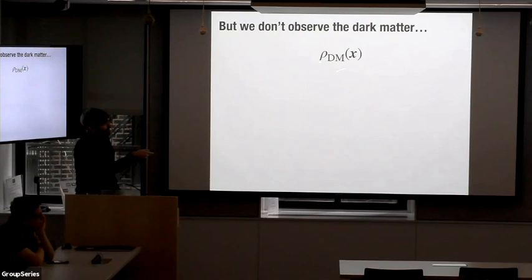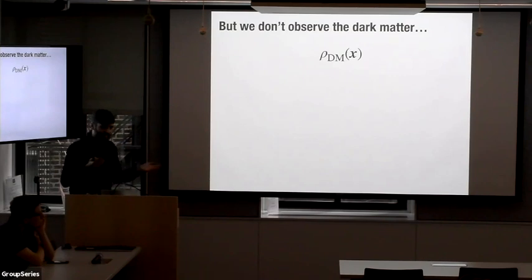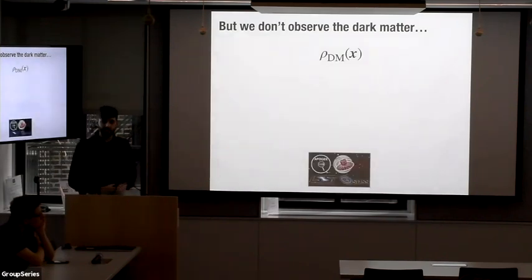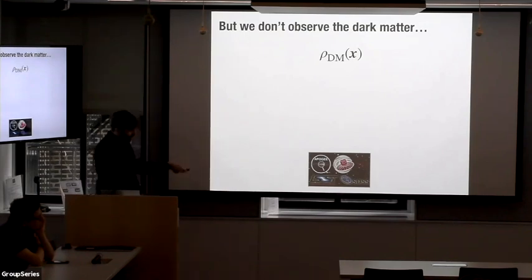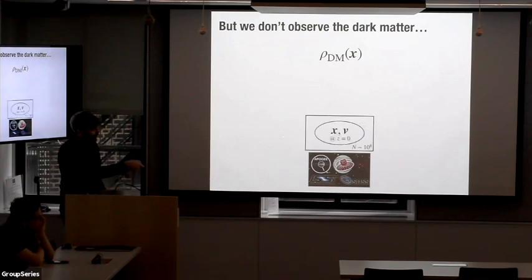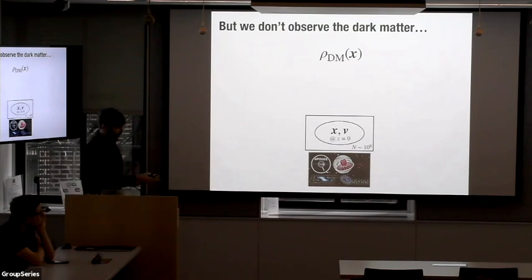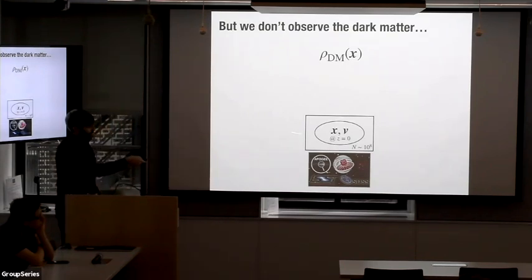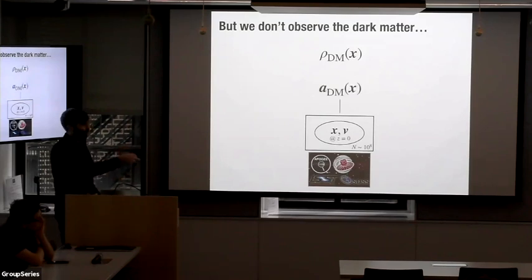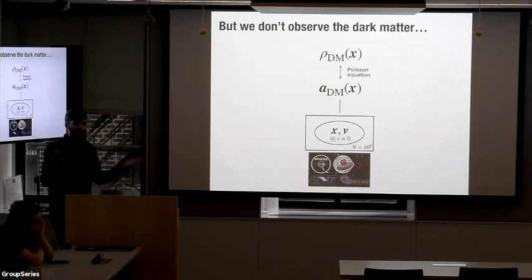The obvious challenge is that we want to measure the density of dark matter on large scales, but we don't actually observe the dark matter — hence its name. We observe the luminous things: the stars, the gas, etc. From surveys like APOGEE and Gaia we do have access to kinematic information like position and velocity for large numbers of stars, and over the next few years we'll have that for hundreds of millions of stars. These stars are orbiting in the acceleration field sourced by the density, so if we can use the kinematics to learn the acceleration field, that's enough to get us back to the density.